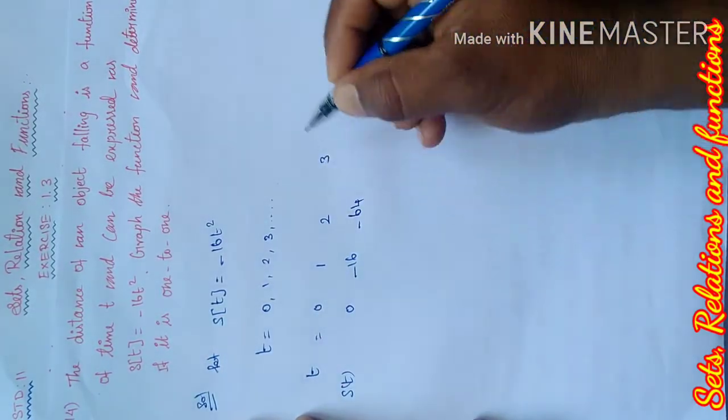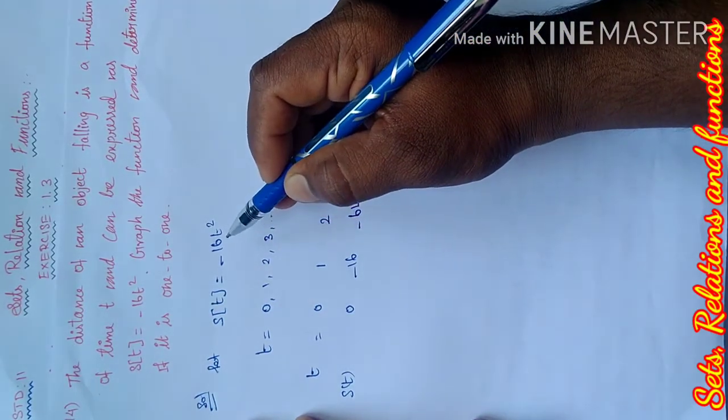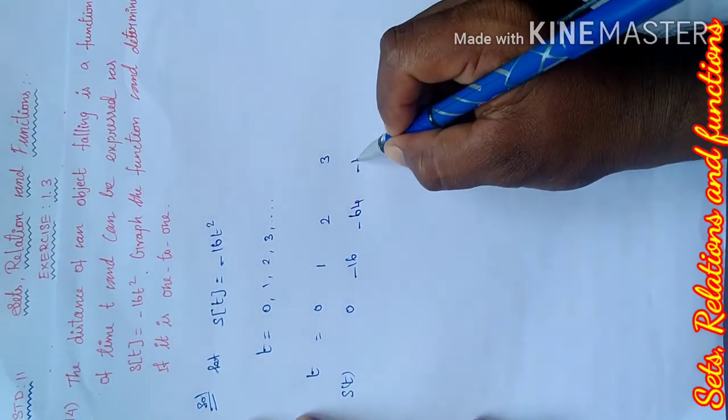When t equals 3, 3 squared equals 9, 9 times 16 equals 144, so minus 144.